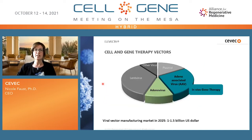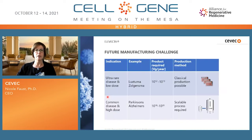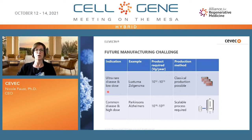Let me switch gears and talk about our platform for adeno-associated virus. When we look at in vivo gene therapy, AAV becomes the predominant vector form. With the products currently on the market — like Luxturna and Zolgensma — they target rare diseases and are administered at relatively low doses, meaning the vector genomes required per year for a marketed product are in the range of 10^12 to 10^13.